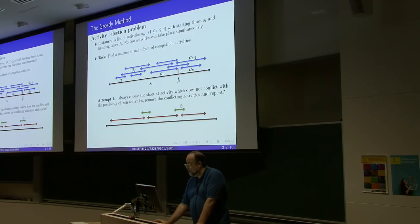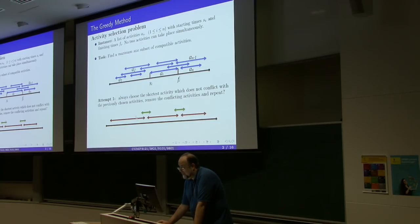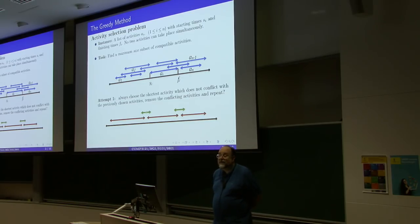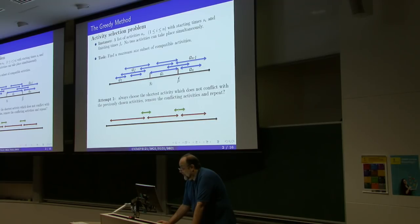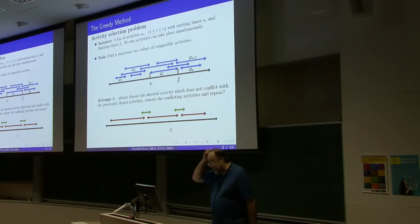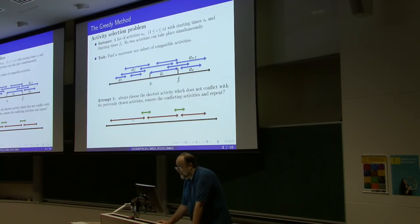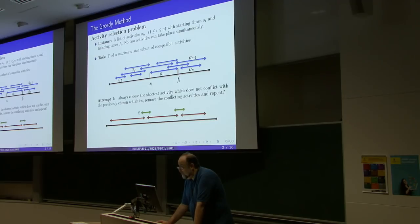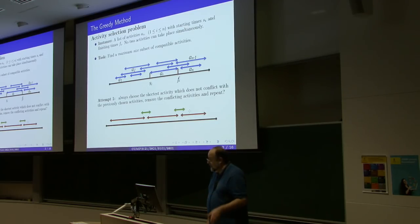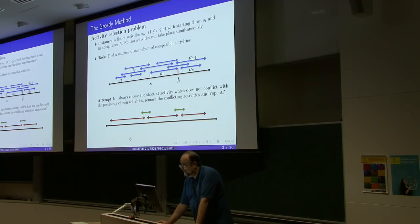Unfortunately, picking the shortest activities does not work. You start by picking the shortest activity — the first green one — then eliminate the conflicting red activities, then choose the shortest available next activity. You end up choosing only two activities, while in fact one can choose three non-conflicting activities. So picking the shortest ones, even though it sounds tempting and logical, does not solve the problem.